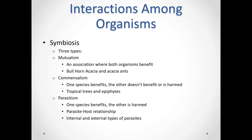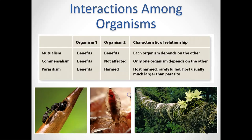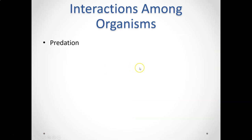Last but not least is a parasitic relationship. Parasites harm their hosts. We have both internal and external types of parasites. A mosquito or tick would be considered a parasite — they're sucking your blood, you don't benefit from that, but the tick or mosquito gets a meal. Here's a chart summarizing these different types of symbiotic relationships: mutualism, commensalism, and parasitism.